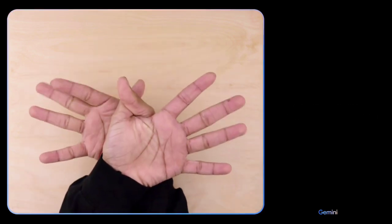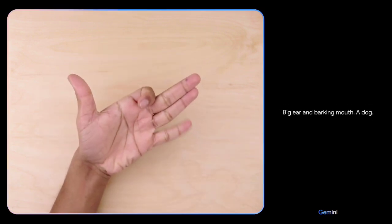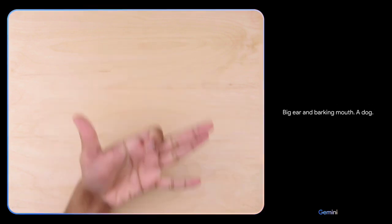I know what you're doing. You're playing rock, paper, scissors. What do you see now? The fingers are spread out to look like the wings of a butterfly. What's this? Big ear and barking mouth. A dog. Sweet.